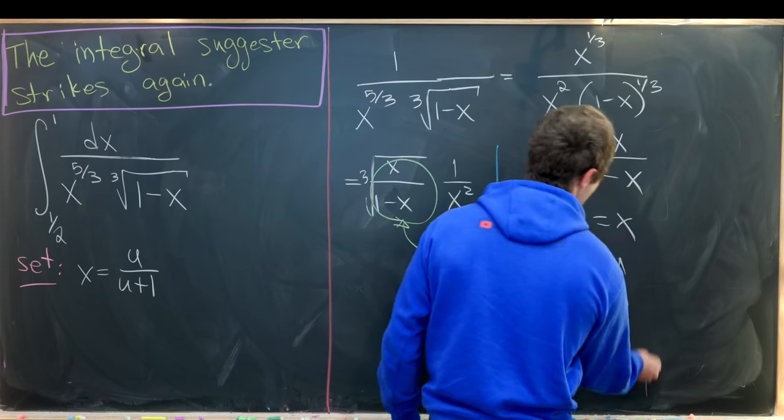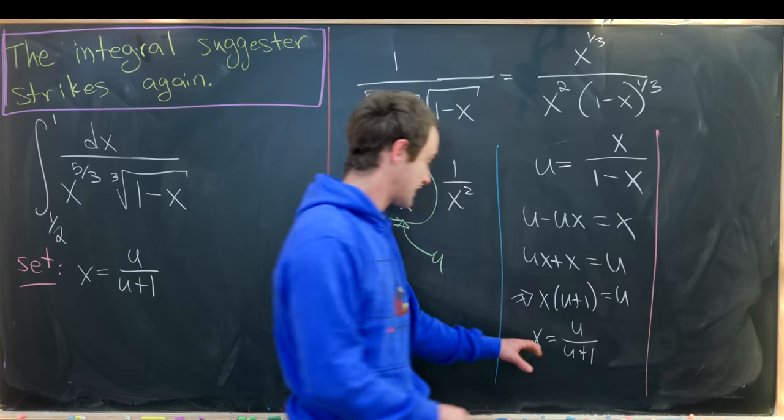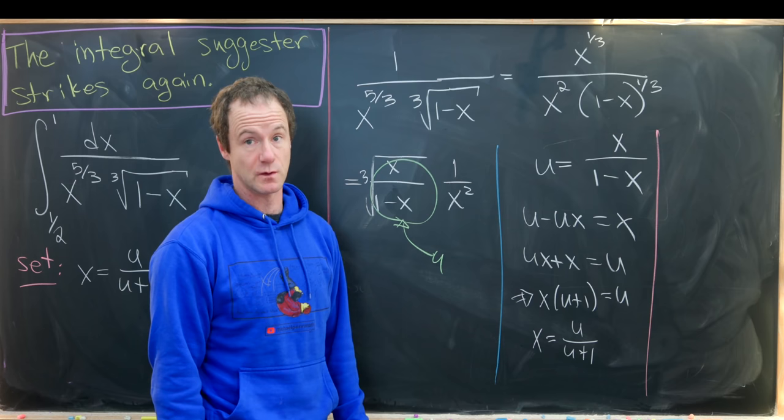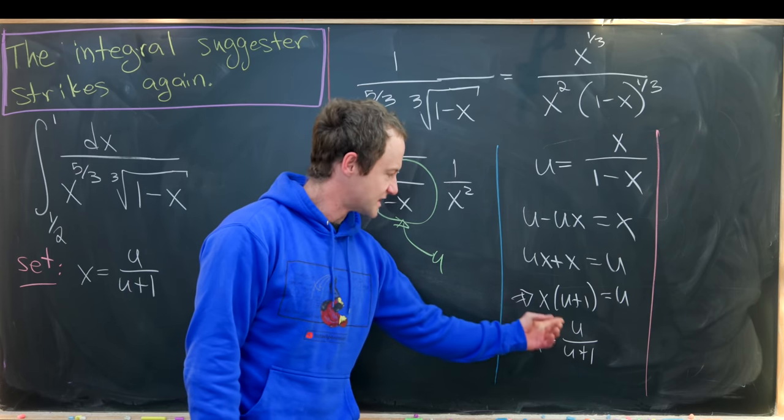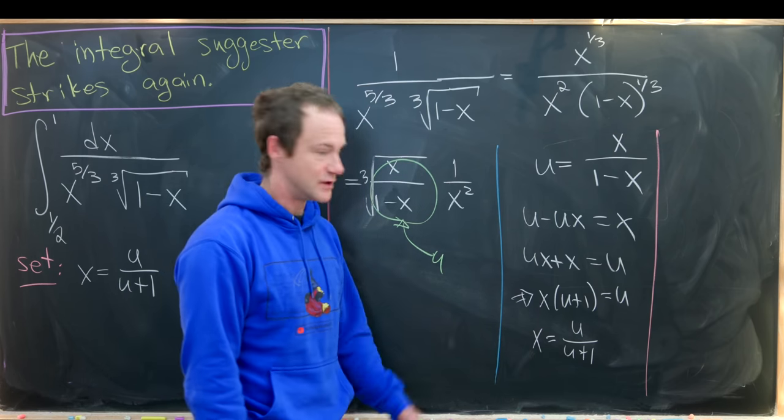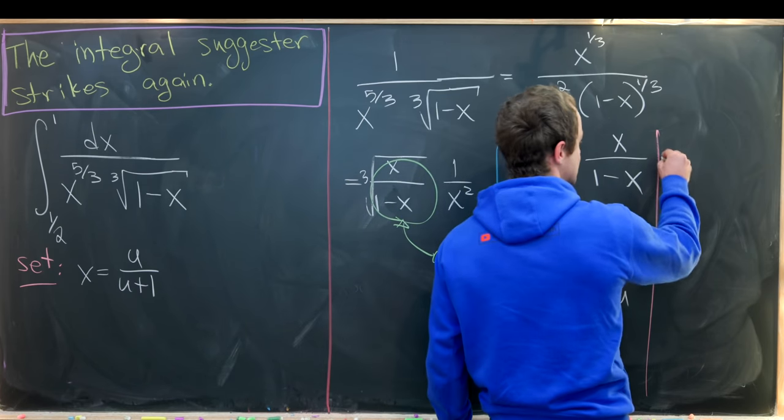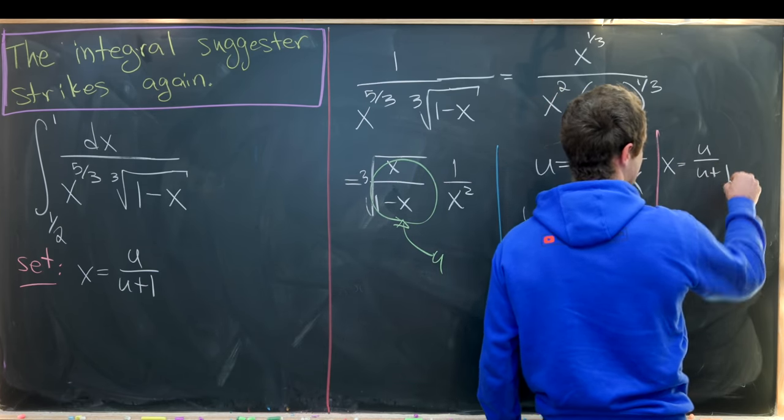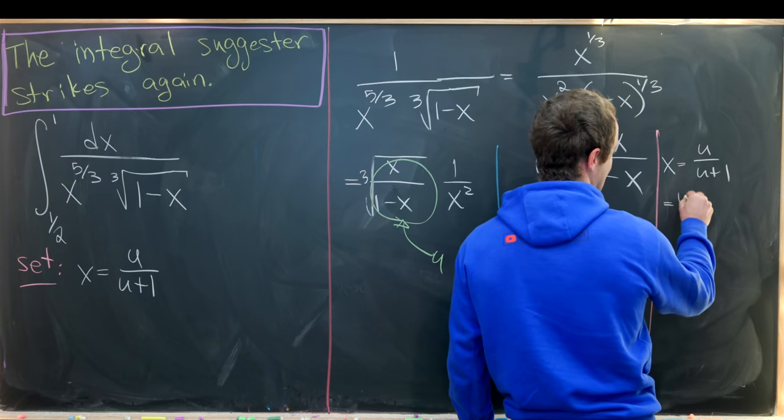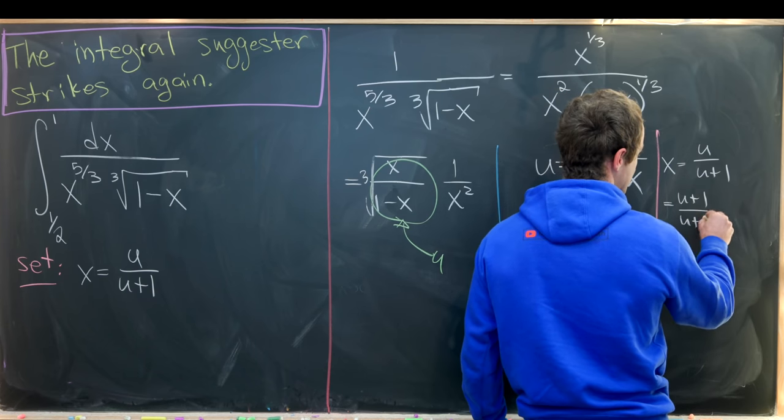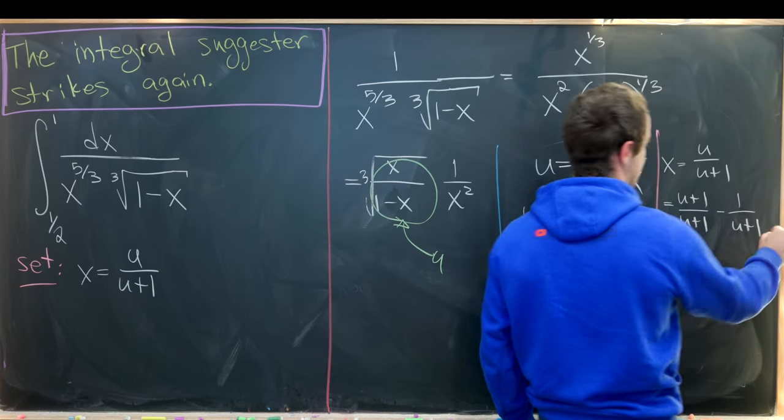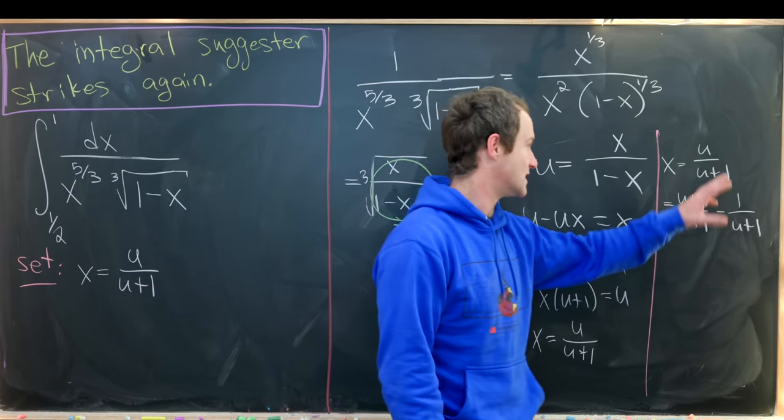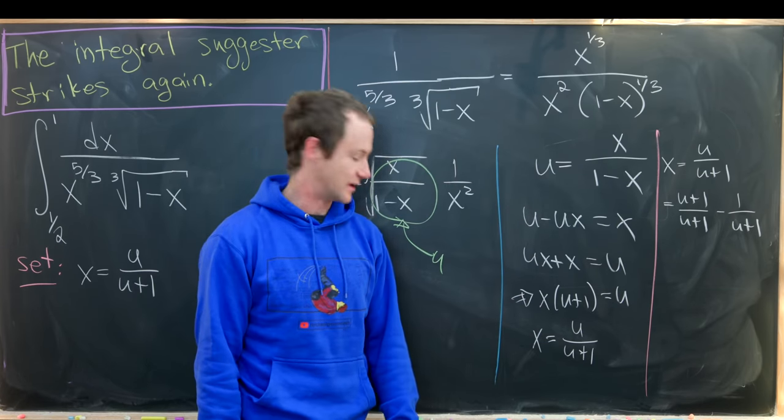So let's calculate that over here. We can calculate that by taking the derivative of u over u plus 1. But there's actually a trick of doing this without using the quotient rule. So let's take this x equals u over u plus 1. And I'll rewrite it as u plus 1 over u plus 1 minus 1 over u plus 1. So notice if I combine those back together, the 1s cancel and I'm left with what I started with.